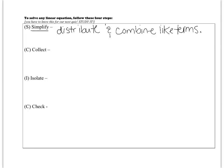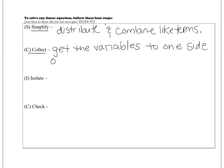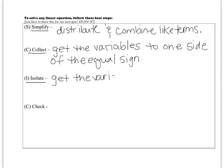So simplify means: distribute and combine like terms. After we've simplified, we go to a step called Collect. We don't always have to collect because we don't always have variables on both sides. When we collect, we get the variables to one side of the equal sign by canceling them out — we either add or subtract a term to get the variables to one side. Then once you have simplified and collected, you Isolate — you isolate the variable by undoing operations to get the variable alone.